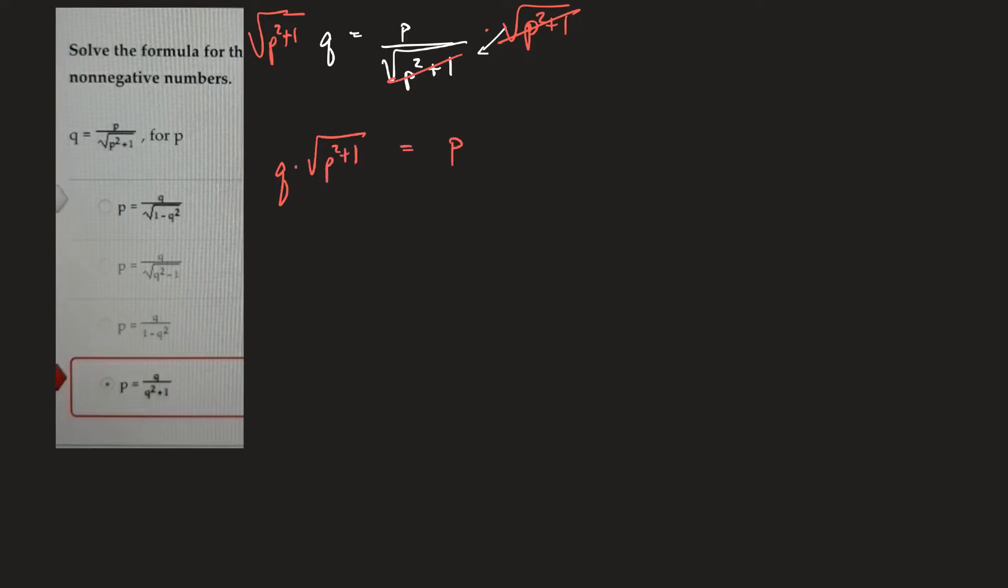I'm okay there now. Now, let's get rid of this square root so I can square everything. So I'm going to square this and square this and square this. So I'll be left with q squared times. Now on this side, the square and the square root cancel. So it would be p squared plus 1 is equal to p squared.